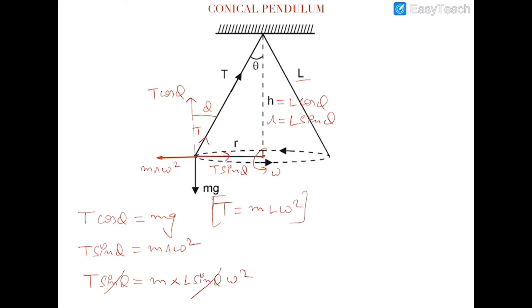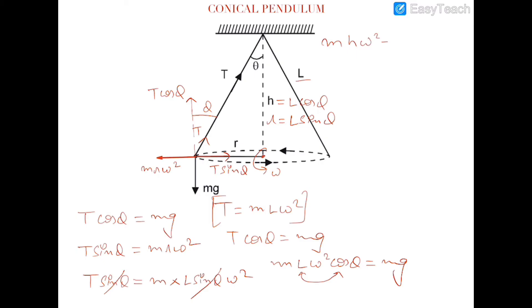Since T equals ml omega squared, substituting into T cos theta equals mg gives ml omega squared cos theta equals mg. Since l cos theta equals h, this simplifies to mh omega squared equals mg, so omega squared equals g over h, and omega equals the square root of g over h.